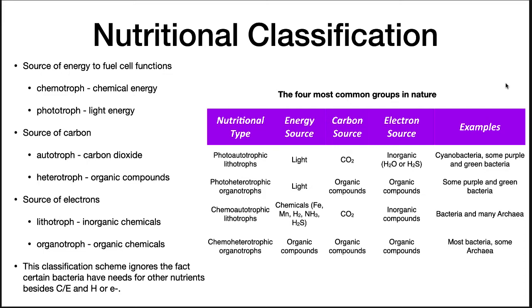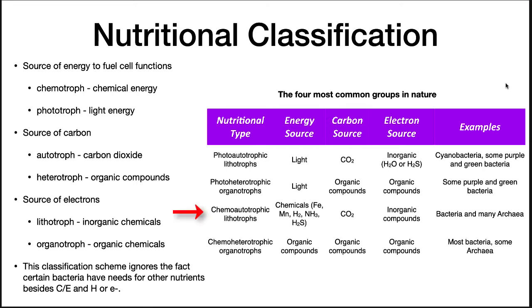Using these classification systems, most organisms fall into just four categories. A photo-autotrophic lithotroph gets its energy from light, its carbon from carbon dioxide, and its electrons from inorganic sources — plants and some bacteria fall here. A photo-heterotrophic organotroph gets energy from light, carbon and electrons from organic sources — some purple and green bacteria. Chemo-heterotrophic organotrophs encompass all animals and many bacteria, obtaining energy, carbon, and electrons all from organic sources. Finally, chemo-autotrophic lithotrophs collect energy from chemicals, carbon from carbon dioxide, and electrons from inorganic sources.